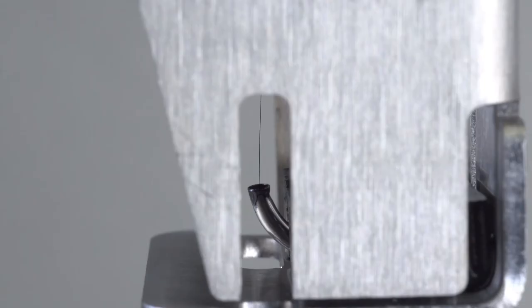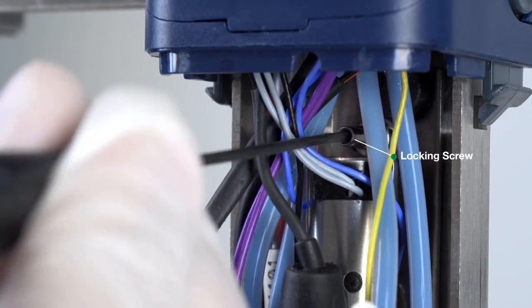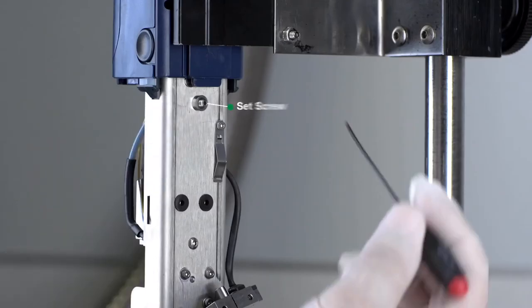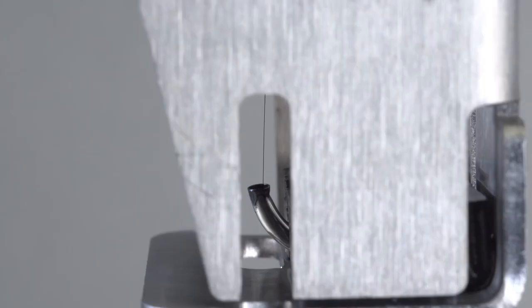To align the ink stream, start by loosening the locking screw located on the front of the unit and adjust the set screw on the back as needed until the ink stream appears in the middle or center of the gutter. To do this, you will need to look at the printhead from the side.